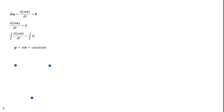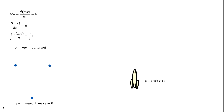Imagine an explosion that sends three particles out in different directions. Assume the momentum of the system of three particles was zero before the explosion — it would then have to be zero afterwards. The sum of each of the masses times their velocities must equal zero. If we knew the momentum of two of the particles, we could derive the third.